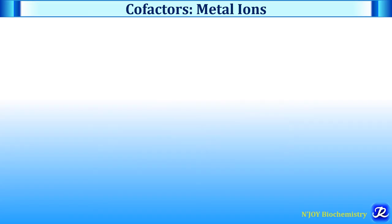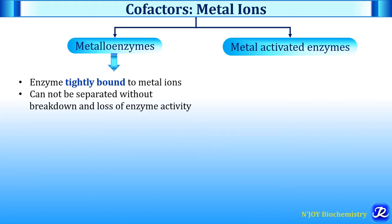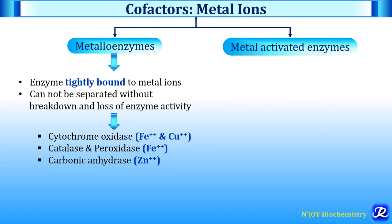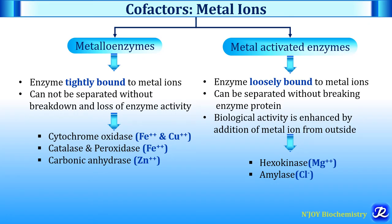Cofactors containing metal ions can be classified as metalloenzymes or metal-activated enzymes. In metalloenzymes, the enzyme is tightly bound to metal ions and cannot be separated without breakdown and loss of enzyme activity. Examples are cytochrome oxidase, which contains iron and copper; catalase and peroxidase, which contain iron; and carbonic anhydrase, which contains zinc. In metal-activated enzymes, the enzyme is loosely bound to metal ions and can be separated without breaking the enzyme protein, and biological activity is enhanced by addition of metal ions from outside. For example, hexokinase requires magnesium and amylase requires chloride.